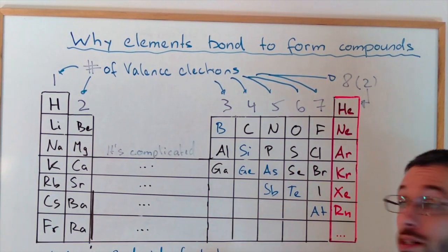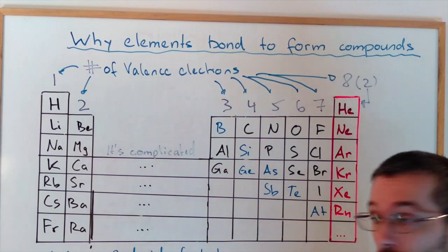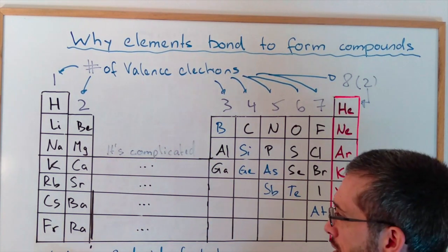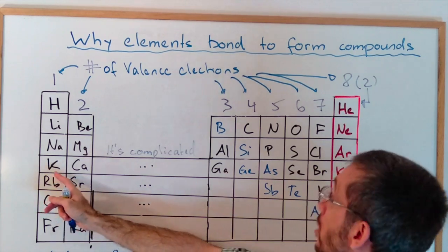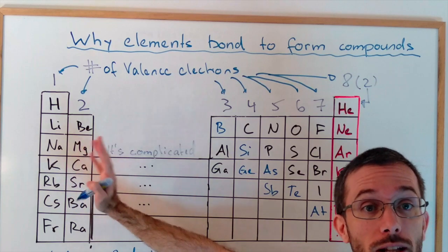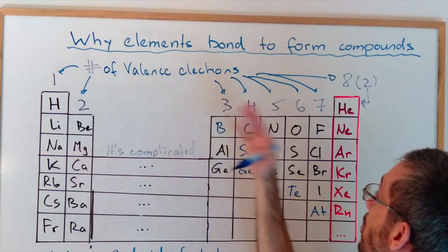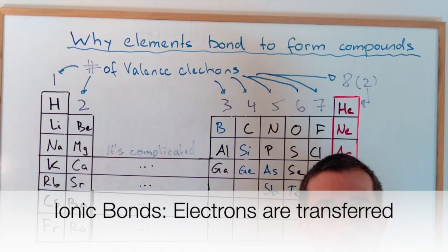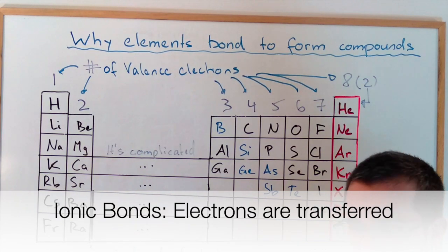Now the question is, how do the metals and non-metals do this? The easiest case is if a metal gets together with a non-metal. The metal gives up some electrons, the electrons transfer to the non-metal, and we create what's called an ionic bond.